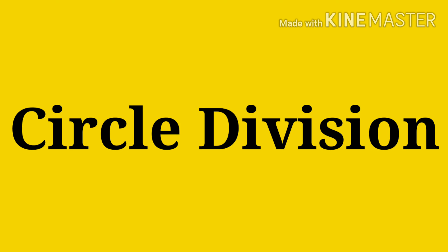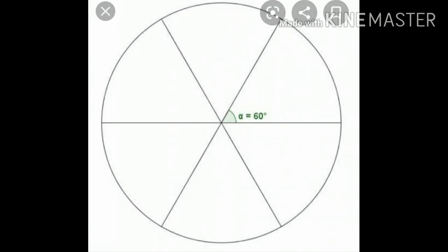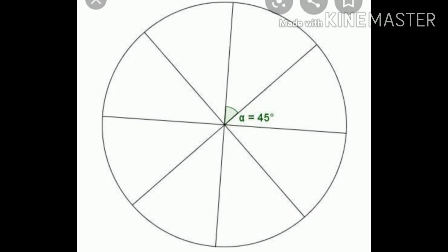Our next topic is circle division. Look at this figure. Here, the circle is divided into 4 equal parts and each part is 90 degrees. Here, the circle is divided into 6 equal parts and each part is 60 degrees. And here, the circle is divided into 8 equal parts and each part is 45 degrees each.